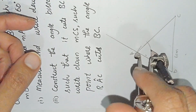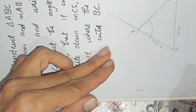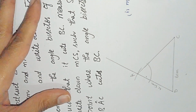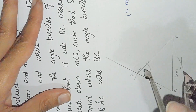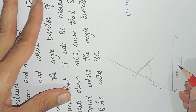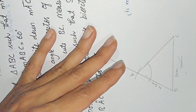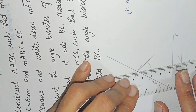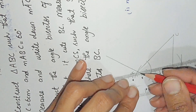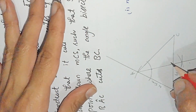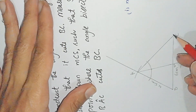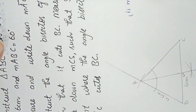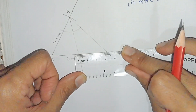Taking A as center, draw an arc which cuts both lines of the triangle. Where the arc cuts, place the compass open with a suitable radius and draw two more arcs where they intersect — this gives the angle bisector. It meets line BC at point S. Now measuring CS: CS is equal to 3.3 centimeters.